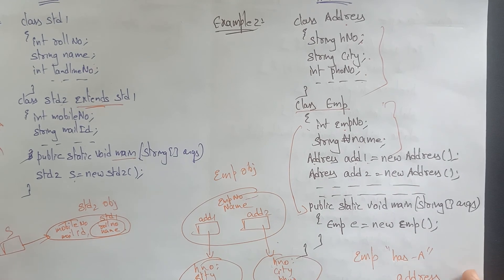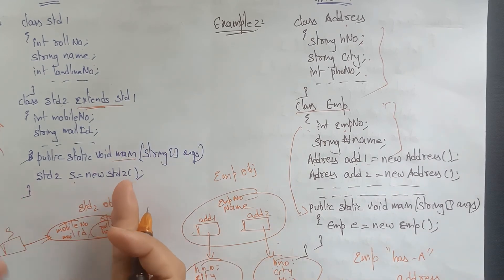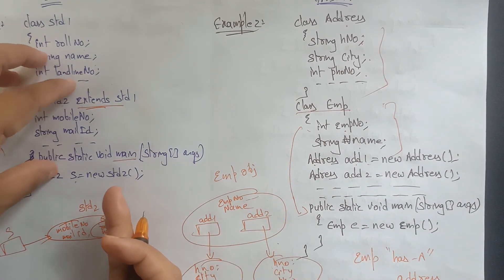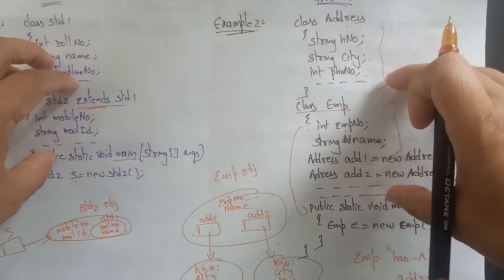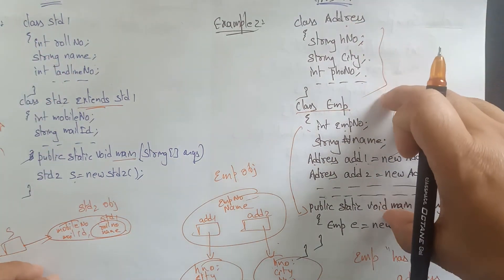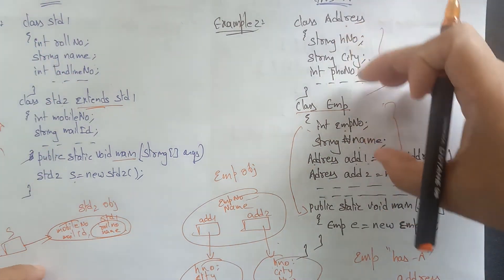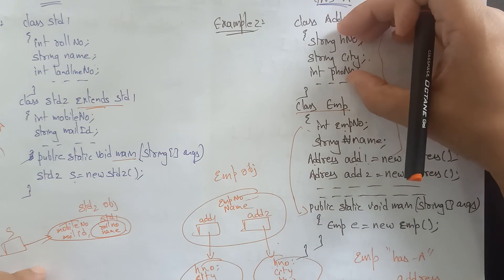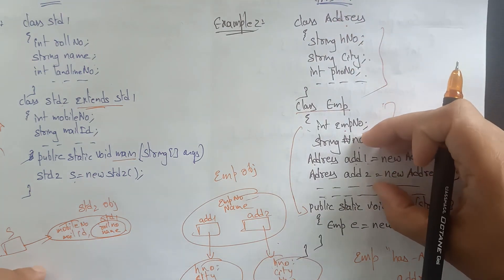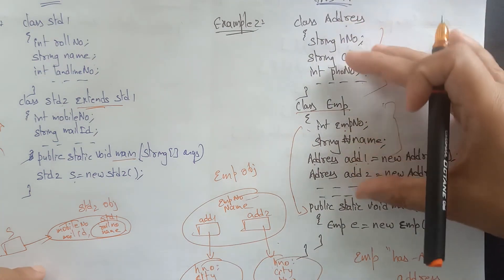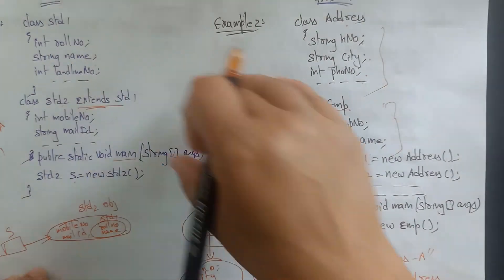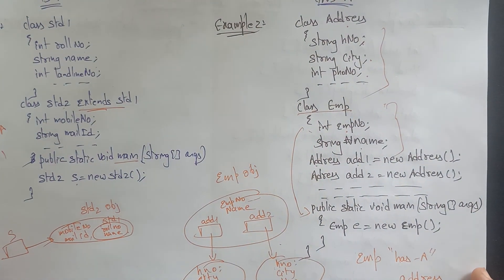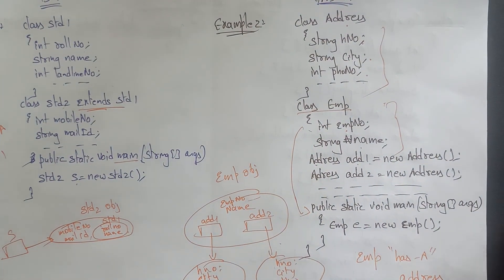So Employee is having a 'has-a' relationship with Address. To summarize: 'is-a' uses extends and refers to inheritance — inheriting properties of one class into another. 'has-a' is composition — we are composing, using an object of one class inside another. Thank you.